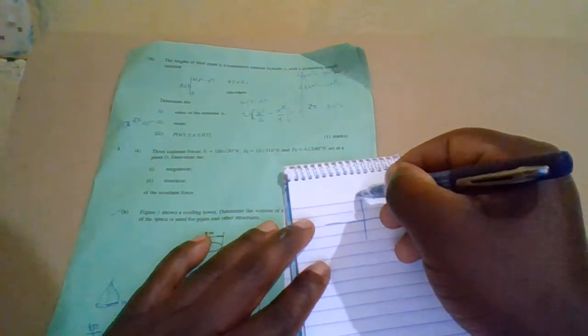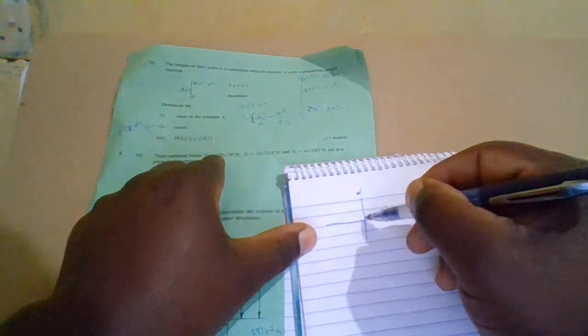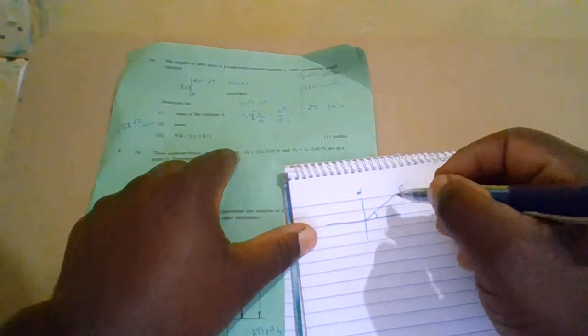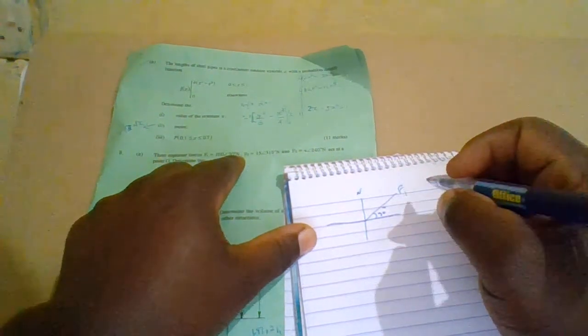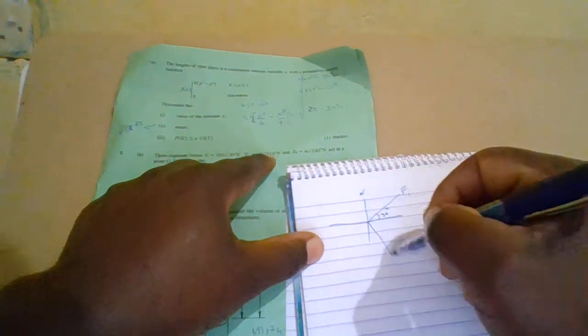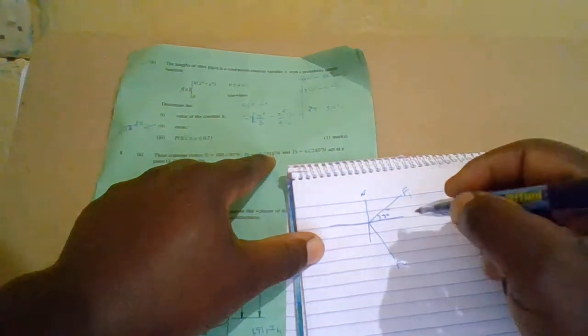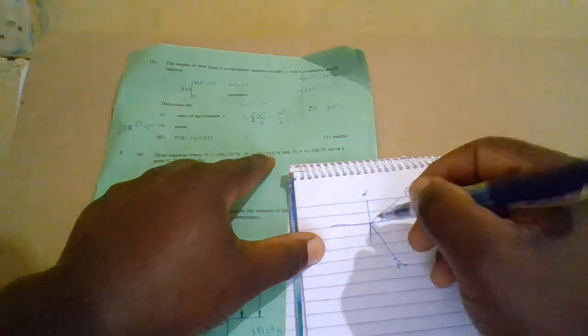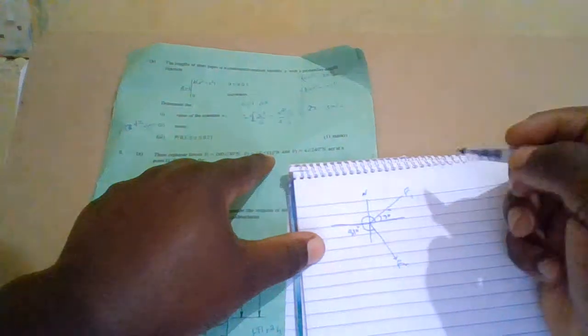We have force 1, F1 acts at 30 degrees. And then we have F2 at 310 degrees.